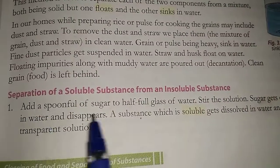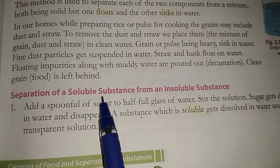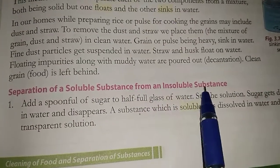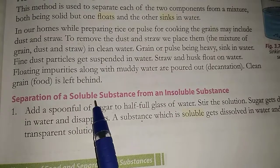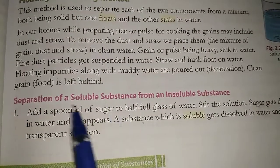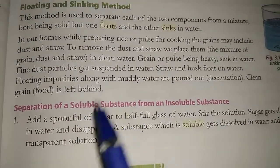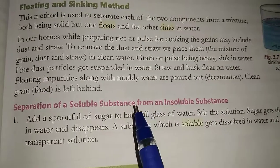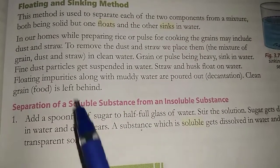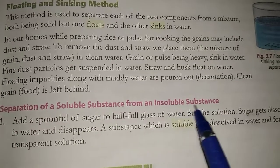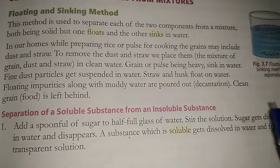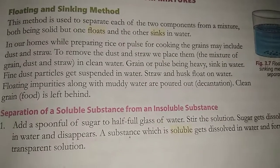Our topic is the separation of a soluble substance from an insoluble substance. First, understand what are soluble substances. Soluble substances are substances that dissolve in water — they completely dissolve and form a clear solution. And what are insoluble substances? They are substances which will not dissolve in the solution.